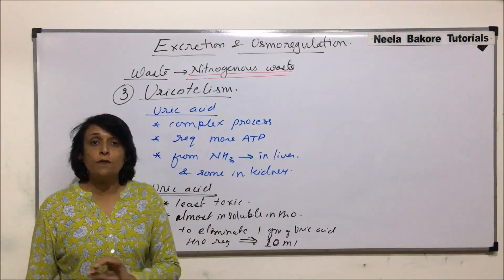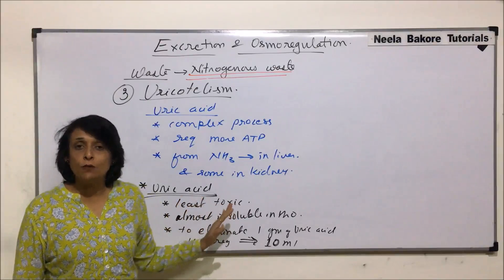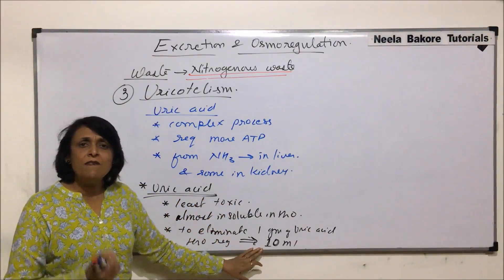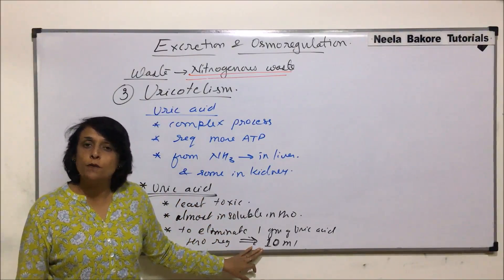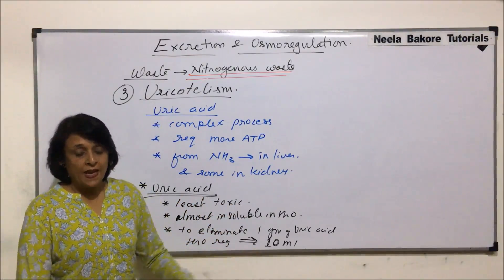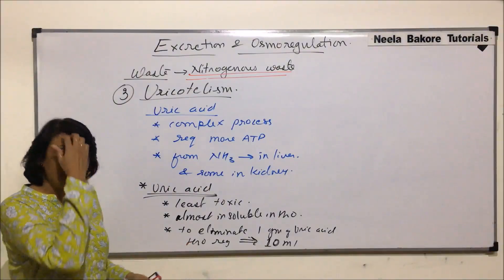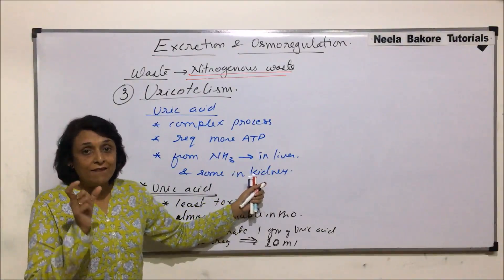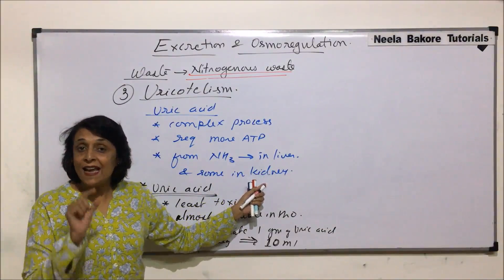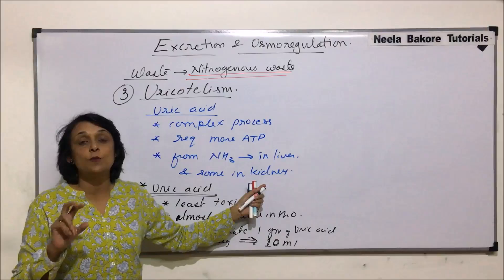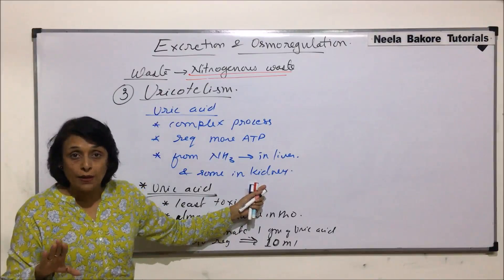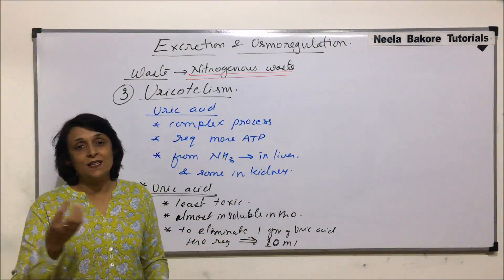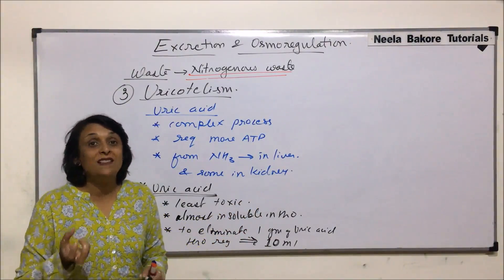Uric acid can be stored in the body for a very long period of time without any ill effect, and it requires very little water for its elimination. Now, uric acid is produced in the liver and kidney. Since uric acid is almost insoluble, it means it is excreted in the form of solid crystals. However, the kidney can handle nitrogenous waste only in solution form.